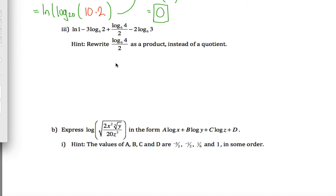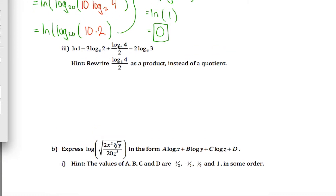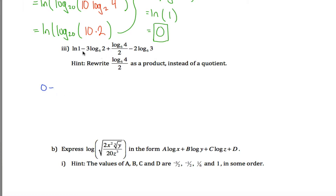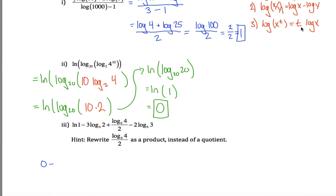This one was pretty challenging: the natural log of 1, minus 3 times the log base 6 of 2, plus a quotient, minus another term. First, the natural log of 1 is just 0, as we found in the prior problem. So this is 0 minus 3 times the log base 6 of 2. Using the third log rule in reverse, I can take this 3 and move it up to the exponent: the log base 6 of 2 to the third power. For the next term, dividing by 2 is the same as multiplying by one half — so it becomes one half times the log base 6 of 4 — and I can apply the third log rule to that in the next step.